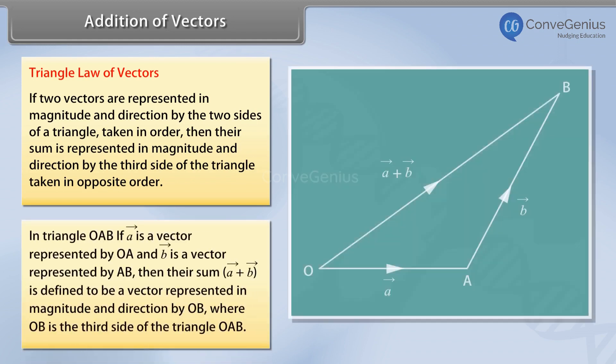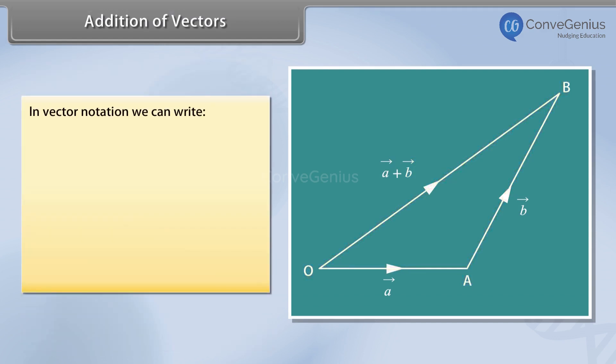In triangle OAB, if vector A is represented by OA and vector B is represented by AB, then their sum, vector A plus vector B, is defined to be a vector represented in magnitude and direction by OB, where OB is the third side of the triangle OAB.